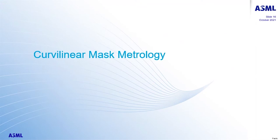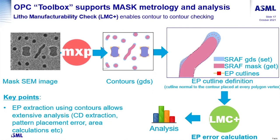Finally, I'd like to share some results on using contour metrology to characterize curvilinear masks. We show our flow for doing contour-to-contour checking for a more complex pattern. The mask shown on the left has contours extracted as described previously, and then we compare the measured mask contours to the design GDS contours. To do this, we use a piece of software familiar in the OPC world called a litho-manufacturability check, which allows contour-to-contour checking and a variety of other analysis options such as CD extraction, pattern placement error, and area calculations.